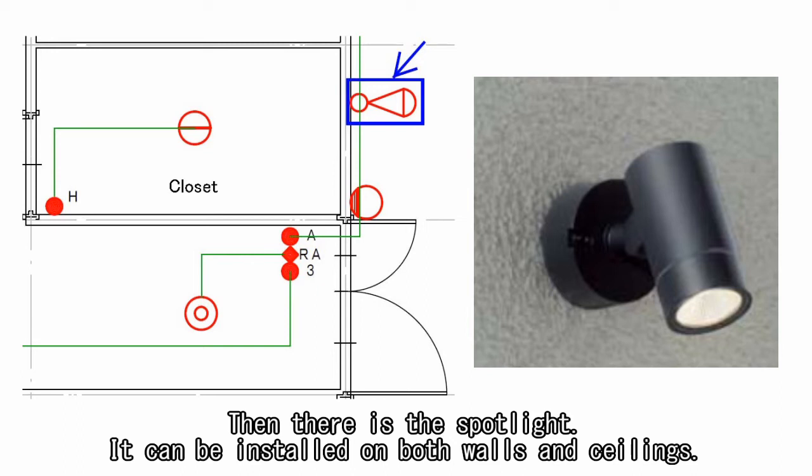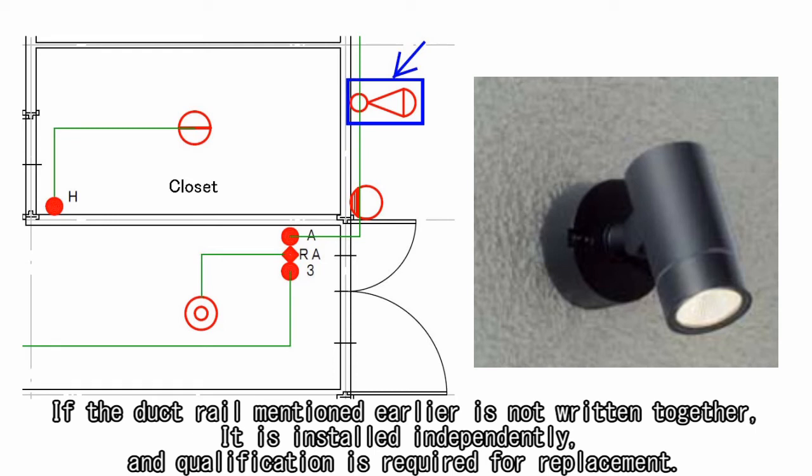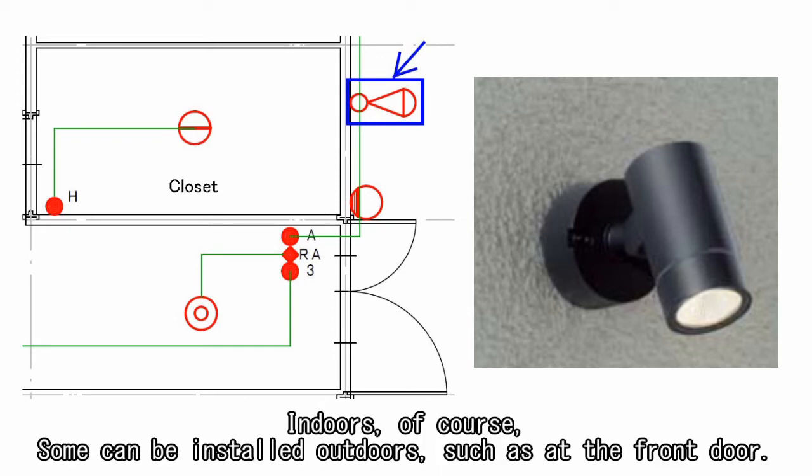Then there is the spotlight. It can be installed on both walls and ceilings. If the duct rail mentioned earlier is not written together, it is installed independently and qualification is required for replacement. Indoors, of course, some can be installed outdoors, such as at the front door.